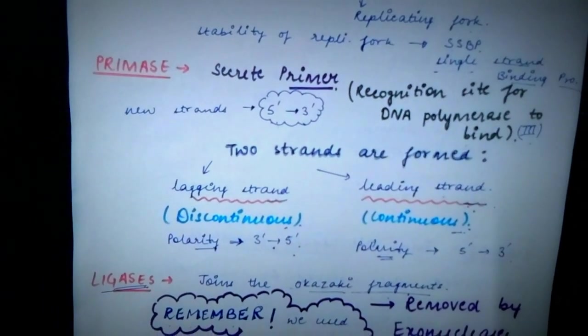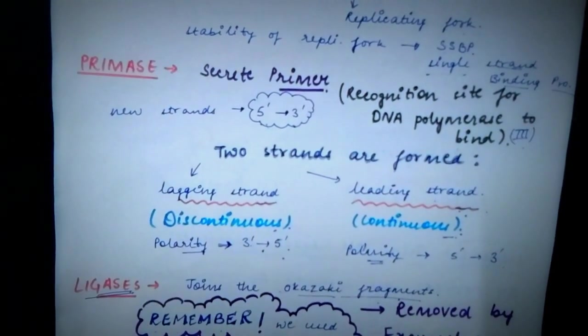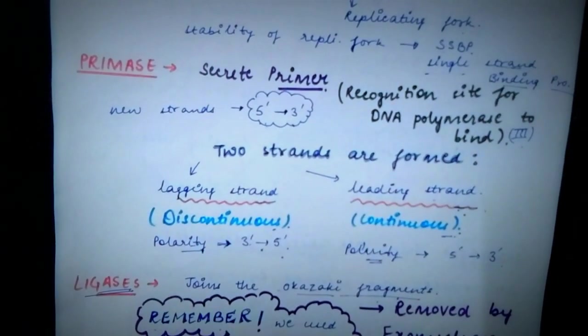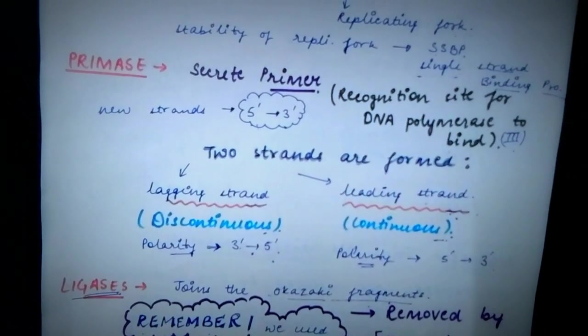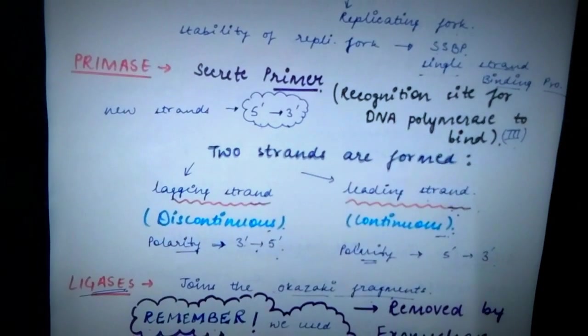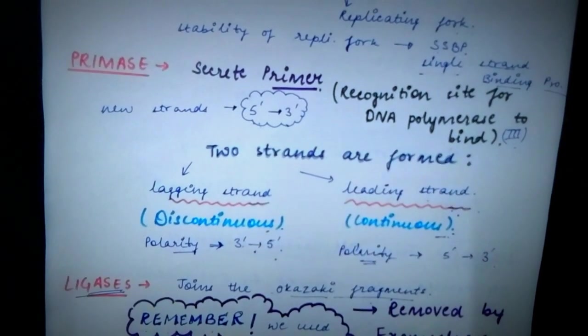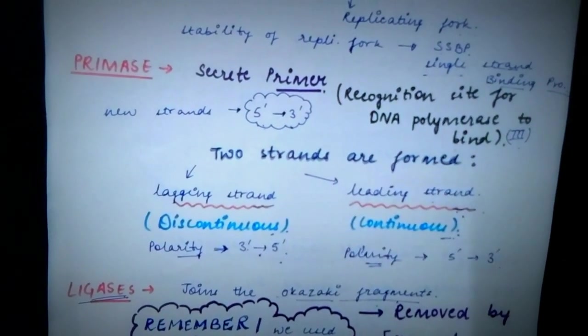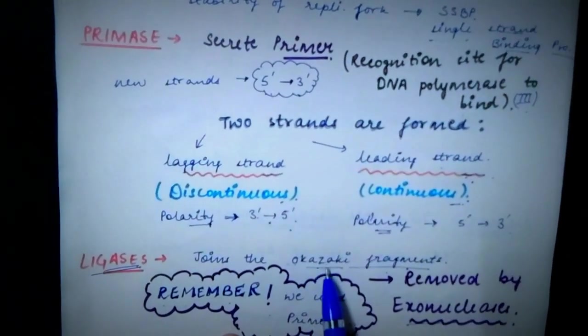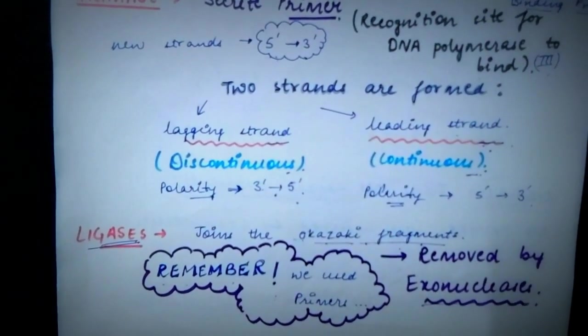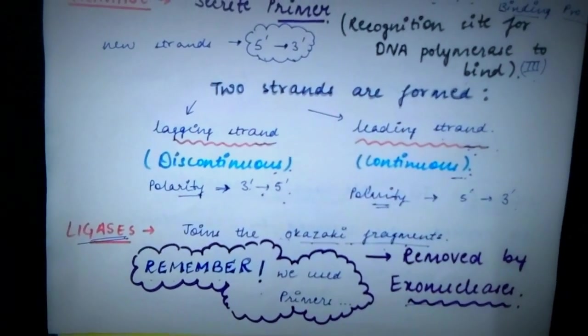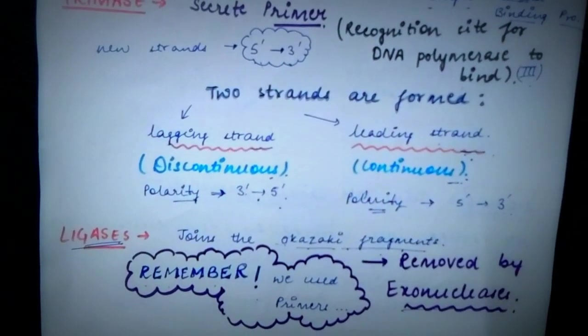Just one more thing that we talked about lagging strand. Why it is known as discontinuous? It is known as discontinuous strand because the lagging strand is formed in chunks of fragments. And these fragments are also known as Okazaki fragments. The spelling is O-K-A-Z-A-K-I. So Okazaki fragments are the chunks of fragments which are formed by the action of DNA polymerase 3.